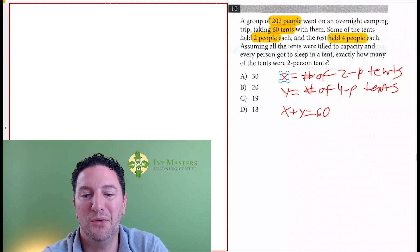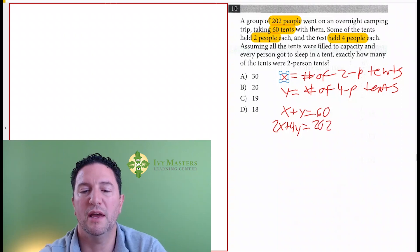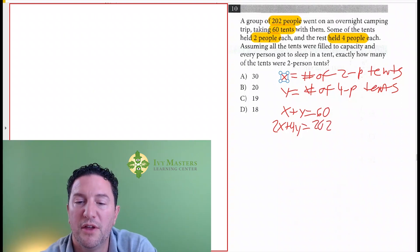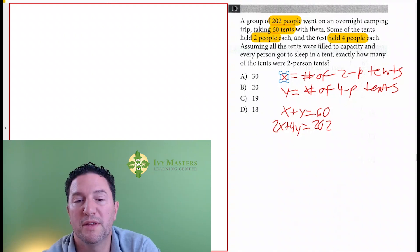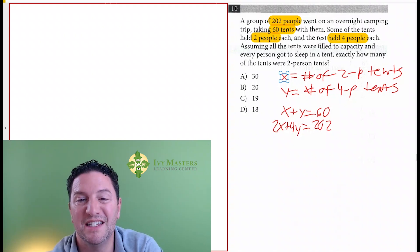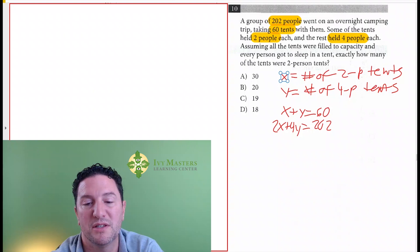And 2x plus 4y is going to be 202. Now, where did I get this? Well, if you add the number of two-people tents, number of four-people tents, that's a total of 60 tents, and it tells us up top, there's a total of 60 tents.